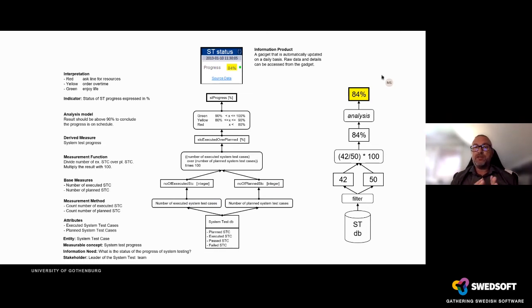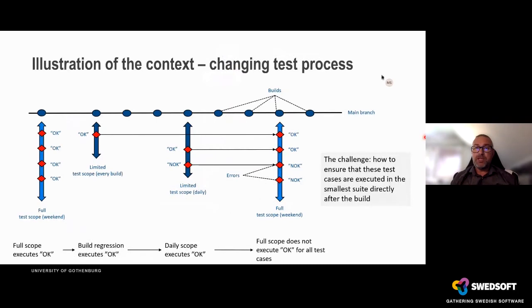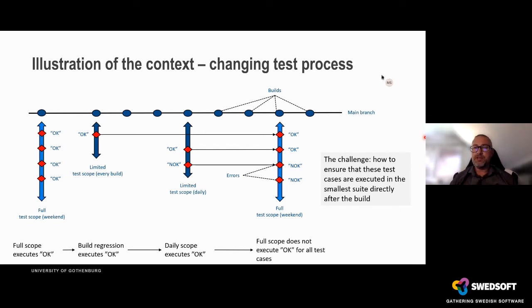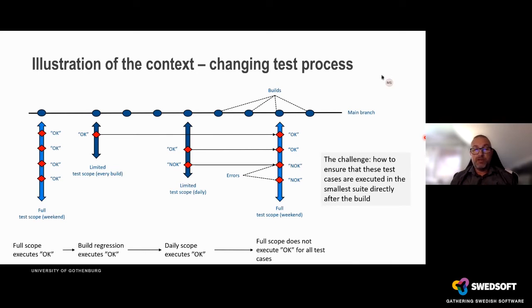In this study, we used data from measurement systems to change the test process and augment test selection. The problem we identified was that test managers are constantly asking themselves whether they could prioritize resources better. Every vertical line is a test suite. Some are bigger — full test scopes executed perhaps once per weekend because they are very costly and require a lot of resources. The smaller ones are executed daily or after every build.